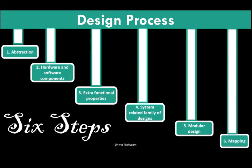The sixth step is regarding the mapping. After putting the components in the right place, you need to map all these components to complete the entire design. So, these are the six major steps in the design process of embedded systems. You need to start from the level of abstraction and then end up with the mapping part.